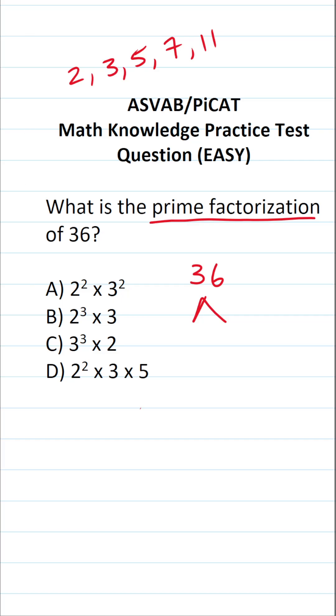So let's break down 36 using as many prime numbers as possible. 36 is the same thing as 3 times 12. 3 times 12 is 36, and of course, 3 is prime.